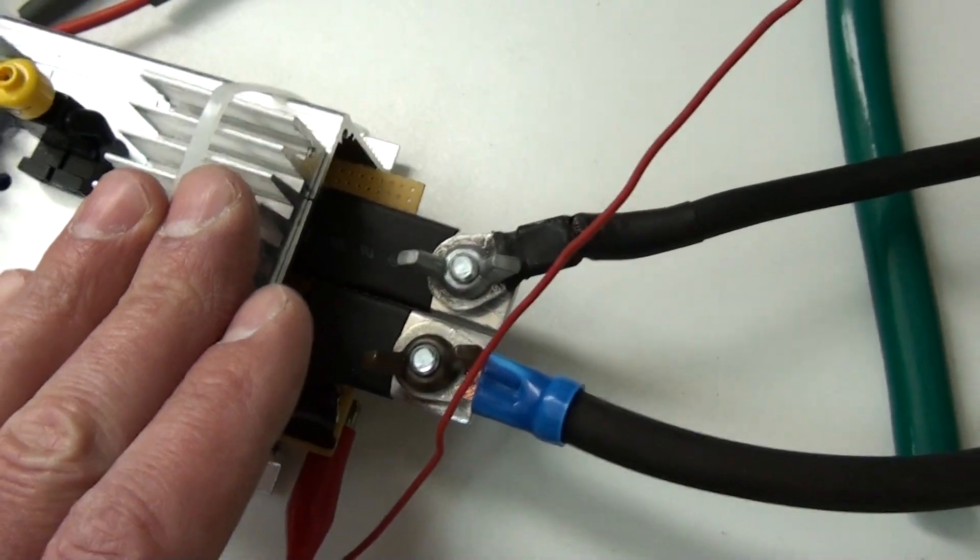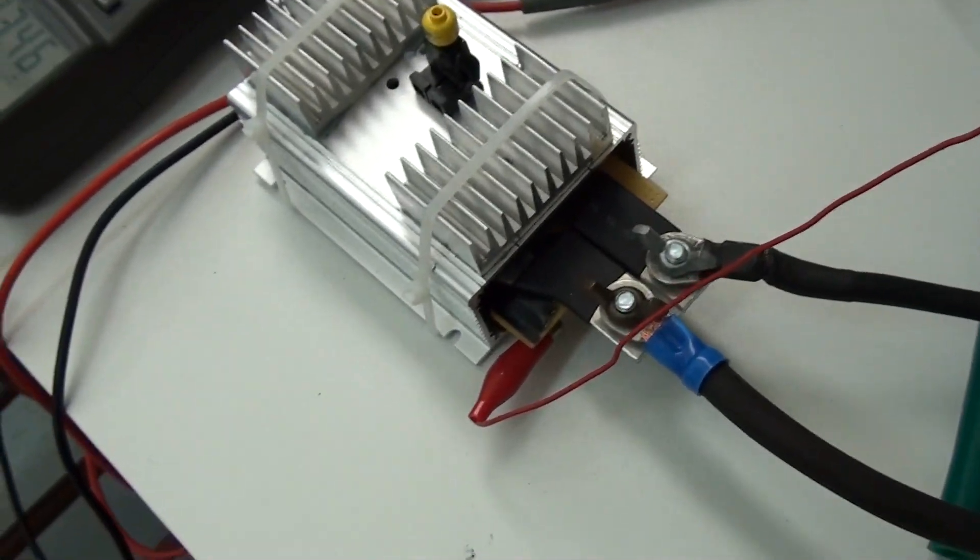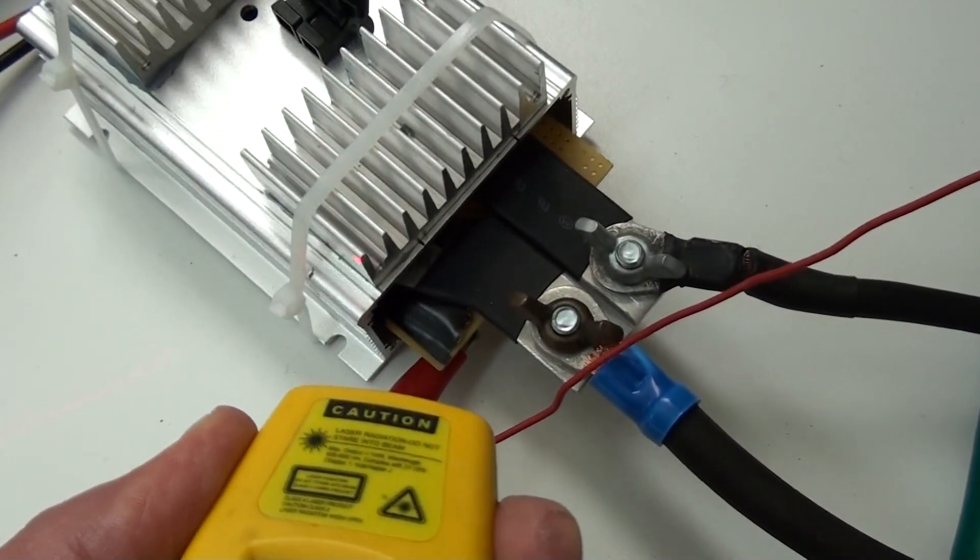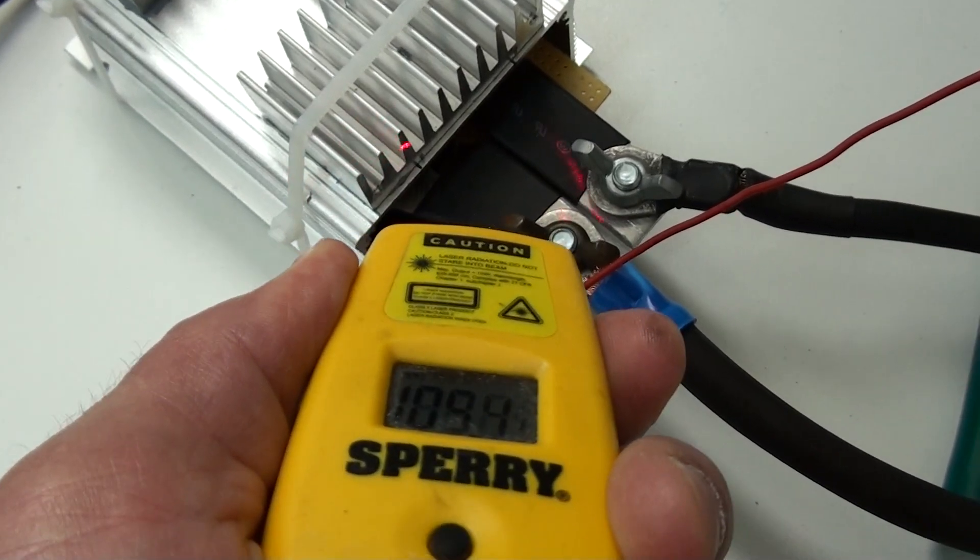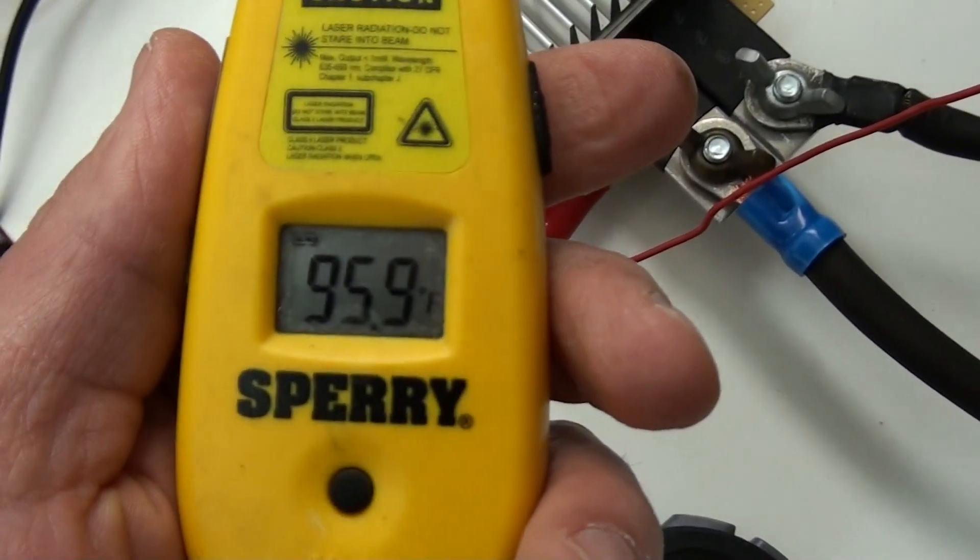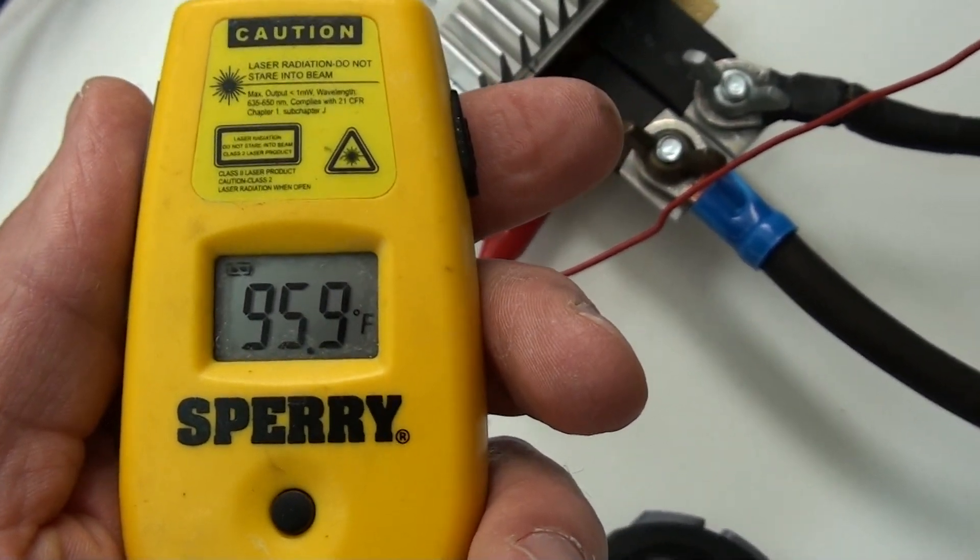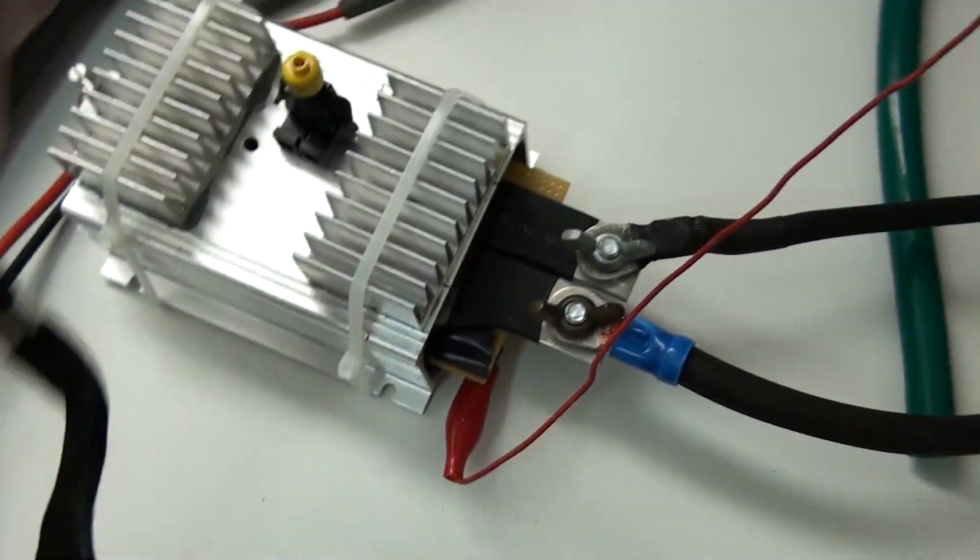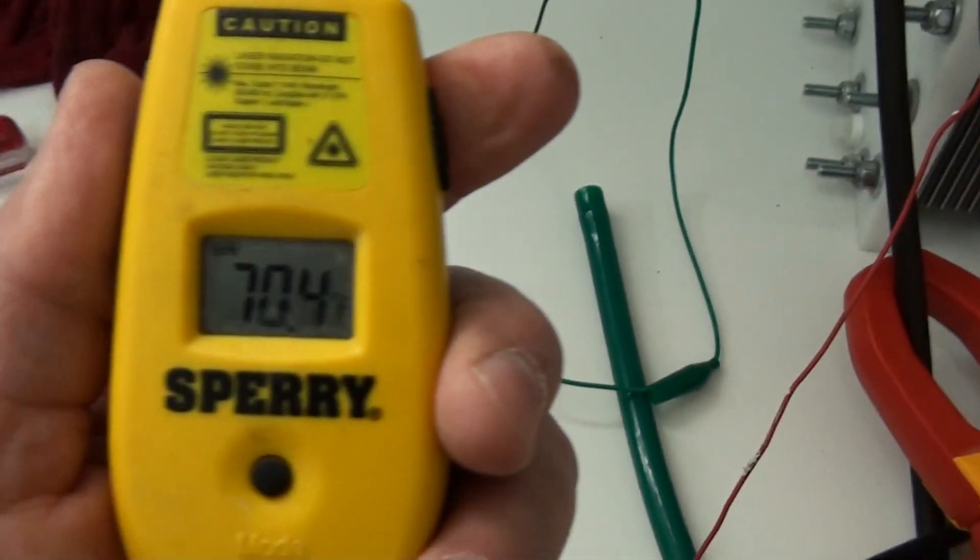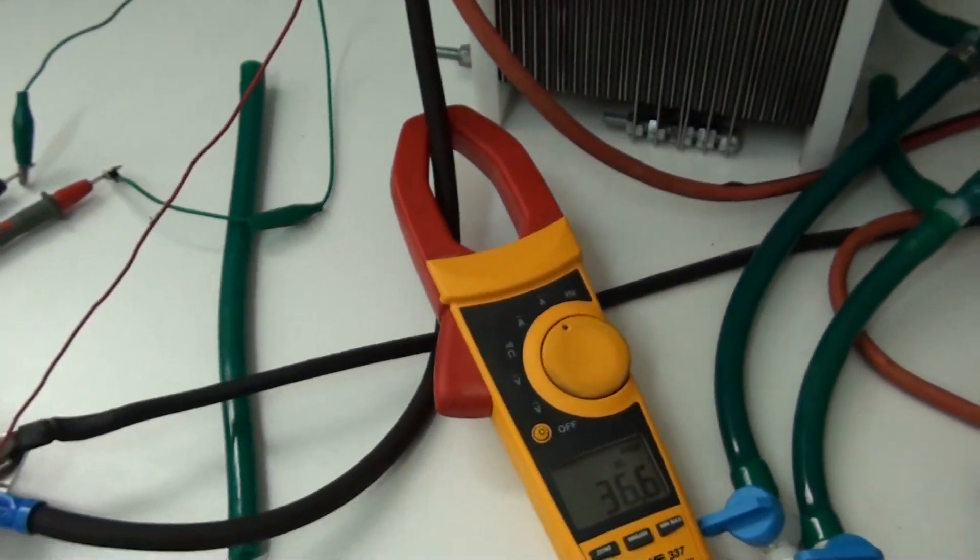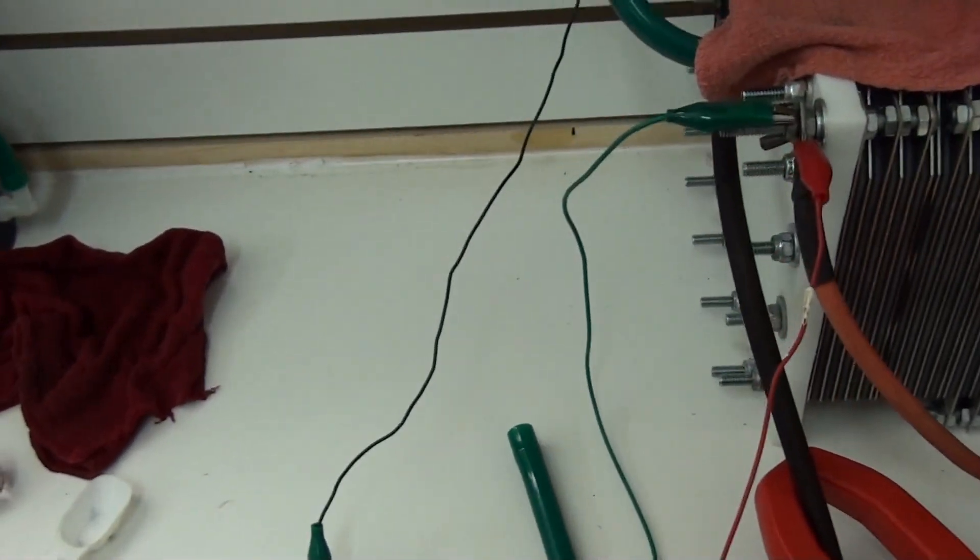The PWM 36 amps, running 96 degrees, and it's 70 in here. So it's only 26 degrees over ambient.